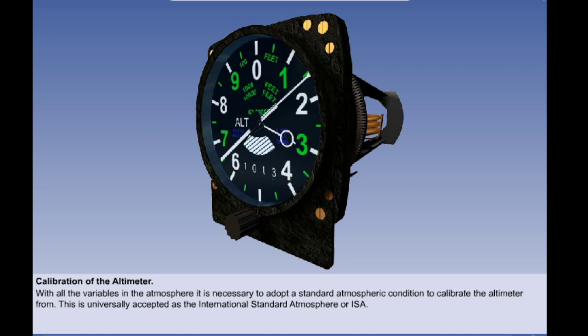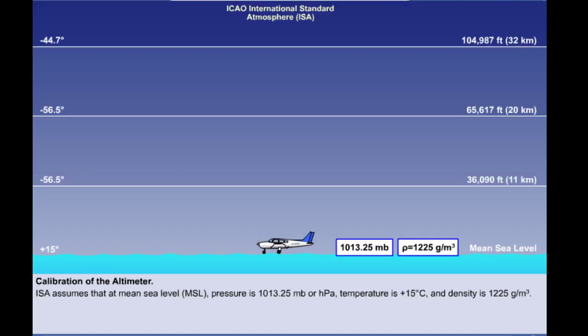ISA conditions assume the following. Firstly, that mean sea level pressure is 1013.25 millibars or hectopascals and the temperature is plus 15 degrees Celsius, while the air density is 1,225 grams per cubic metre.